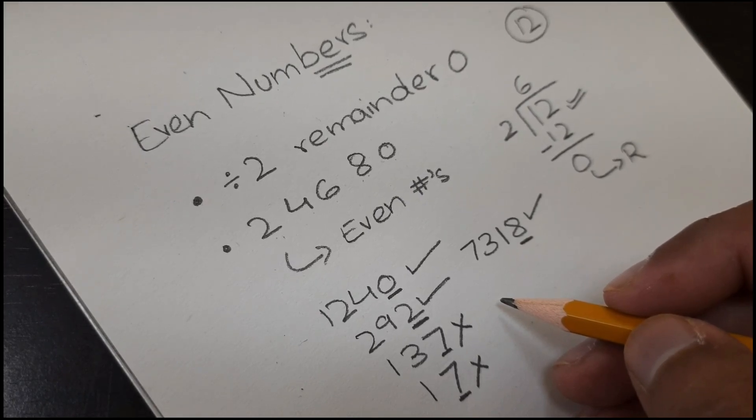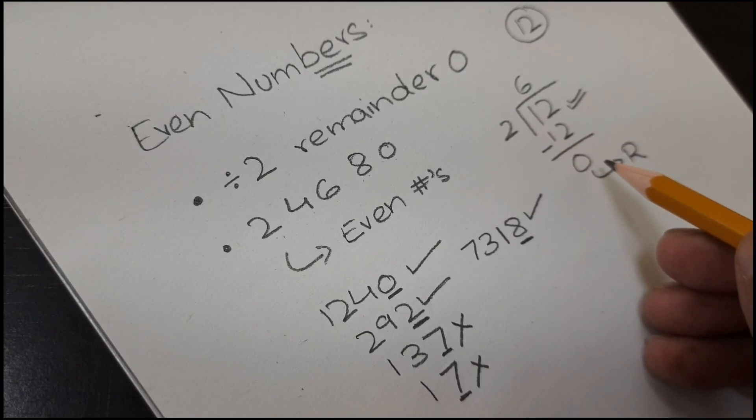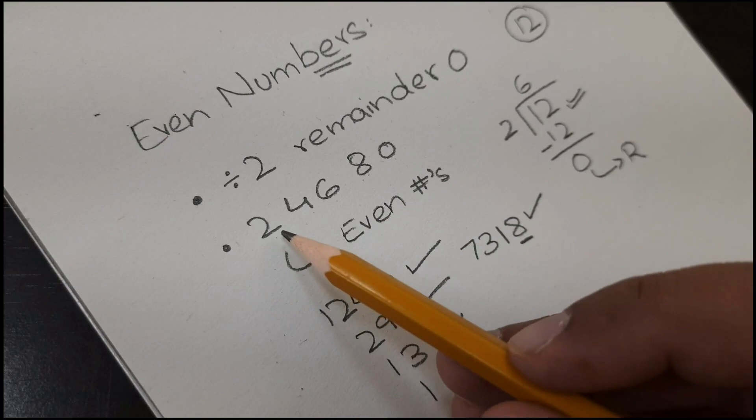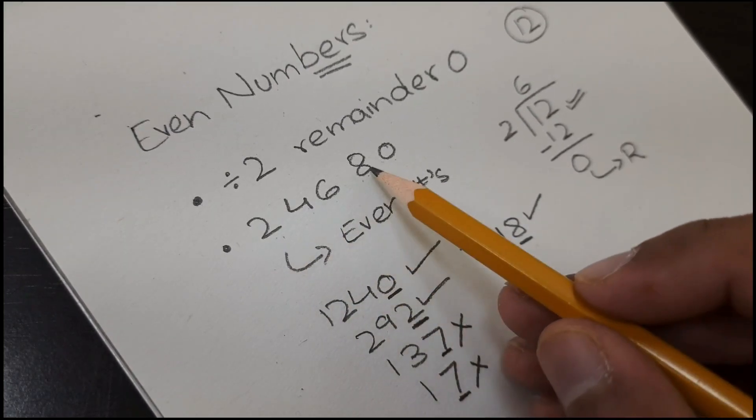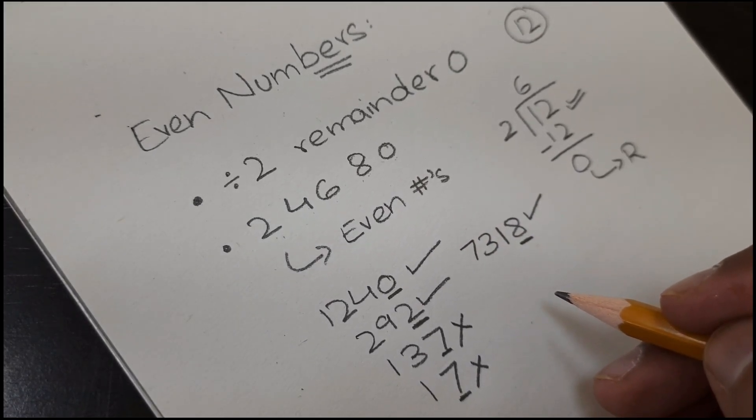So, there are only two conditions for even numbers. First, it is completely divisible by 2, meaning the remainder would be 0. Second, the even number always ends with 2, 4, 6, 8, or 0. This is all about even numbers.